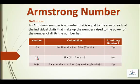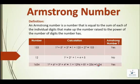Now here we have 12, which has a total of two digits. So 1² + 2² = 5. Since 5 is not equal to the original number 12, it is not an Armstrong number. Similarly, for 1634, we calculate 1⁴ + 6⁴ + 3⁴ + 4⁴, and that equals 1634, which is equal to the original number — so 1634 is an Armstrong number. This is how we can find Armstrong numbers.